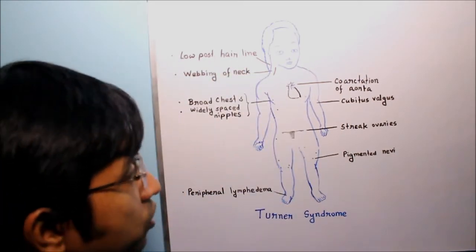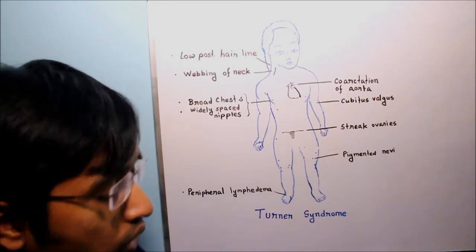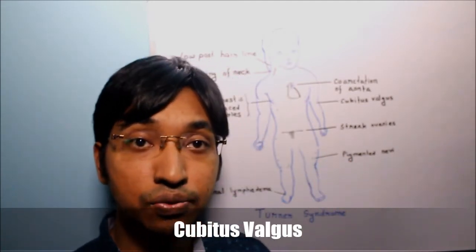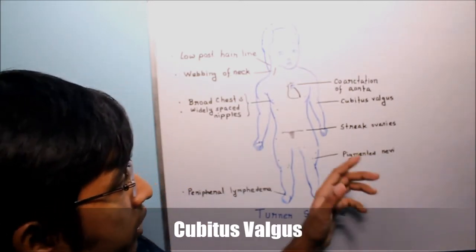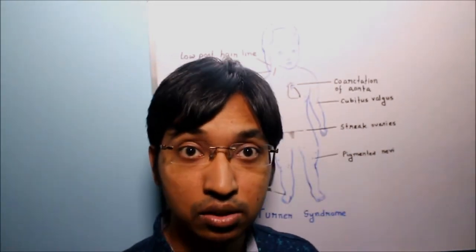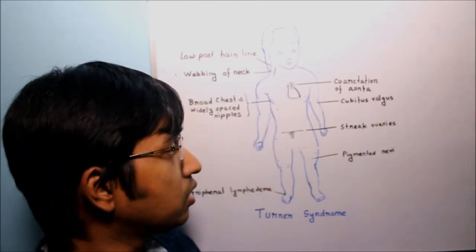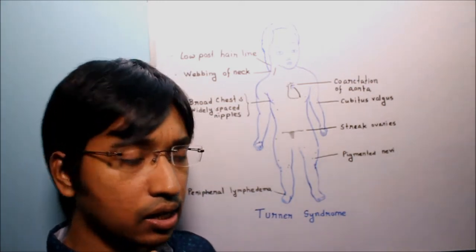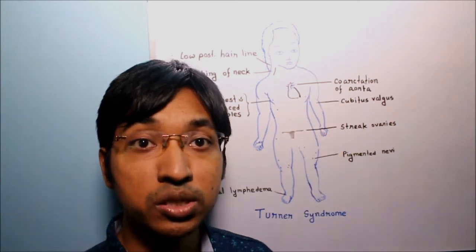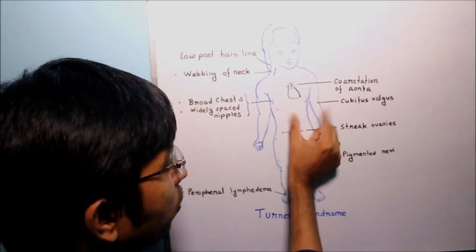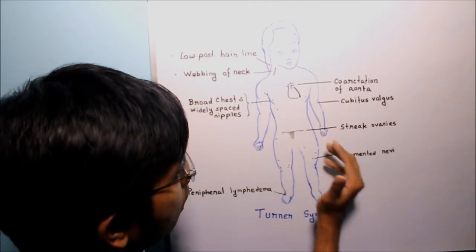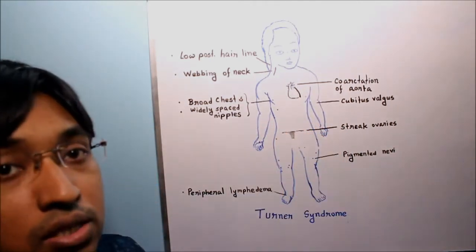Now another interesting clinical feature of Turner syndrome is this cubitus valgus. What is this cubitus valgus? Always remember that cubitus valgus is a medical deformity where the angle that is seen between the fully extended forearm and the body is greater than normal. Normally in a normal individual there is a slight angle between fully extended forearm and the body. However in individuals with Turner syndrome that angle will be greater than normal.